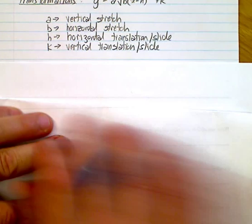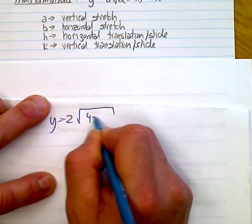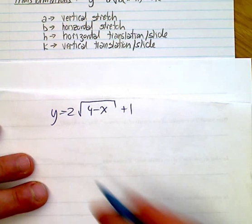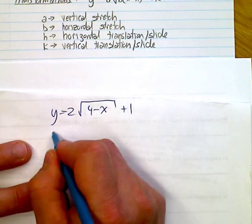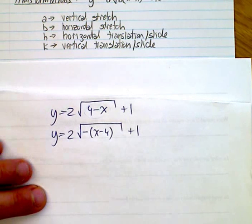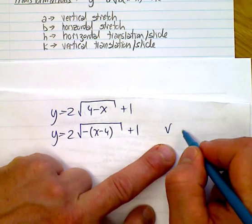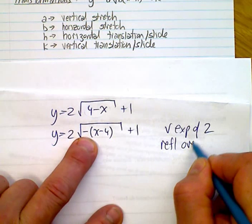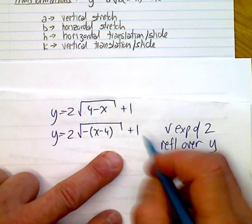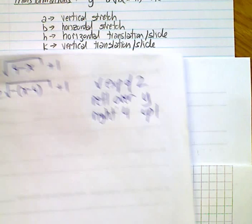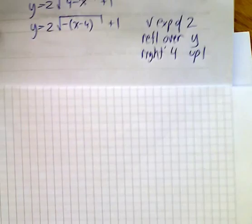Let's look at another one quickly — see if you can sort this out. y = 2√(4 - x) + 1. Before you start sliding, realize we have to change this: y = 2√(-(x - 4)) + 1. So what's happening: a vertical expansion of 2, this negative on the inside is a reflection over the y-axis, then it goes right 4 and up 1.